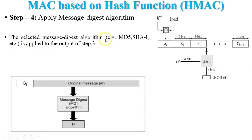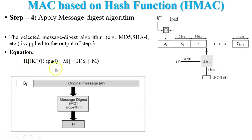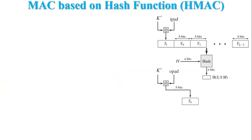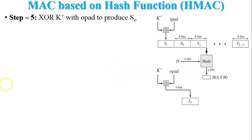Step 4: apply the message digest algorithm. The selected hash function — it may be MD5 or SHA-1 — is applied to the output of Step 3, and we get a hash value. Our equation is: Hash(K+ XOR ipad || M), which we can also write as Hash(Si || M).